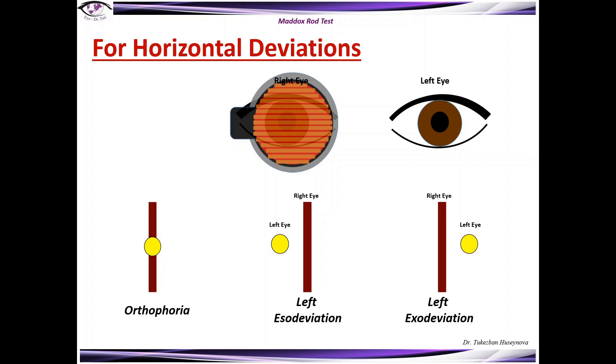And the same way you can say that when the light is on the left side of the line you can say that this is the right esodeviation in relation to the left eye.